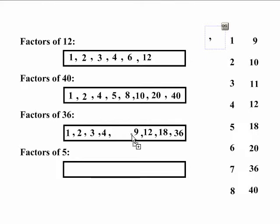Is 5 a factor of 36? No, because 5 times 7 is 35 and 5 times 8 is 40. We've skipped over 36. 5 is not a factor.